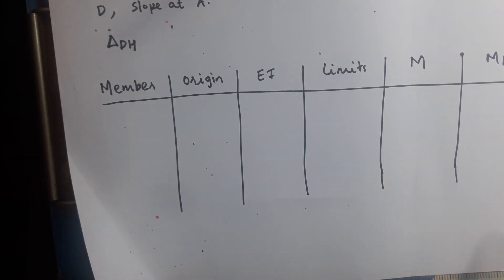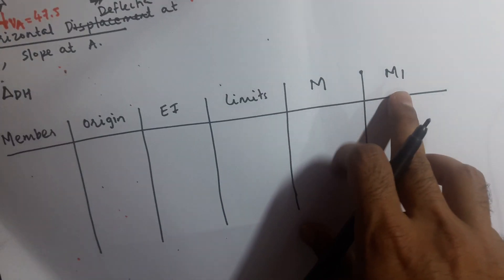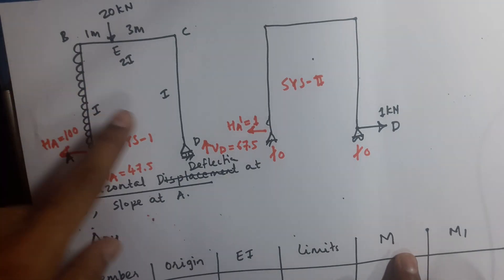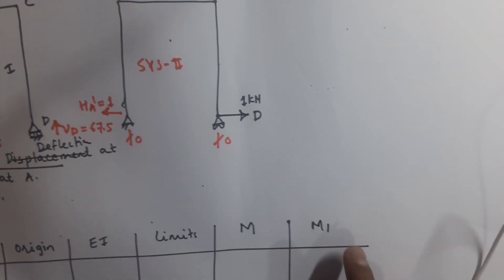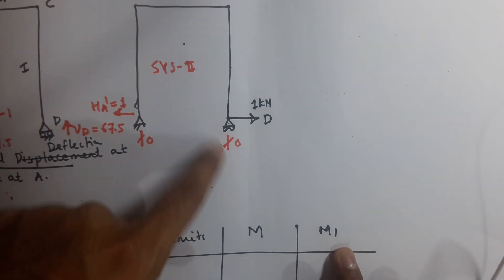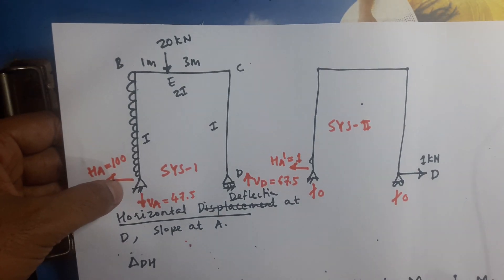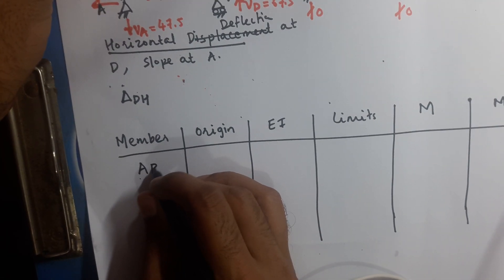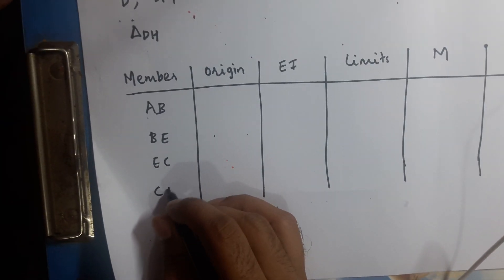We have a table with columns: member, origin, EI, limits, M (moment in System 1 due to real loading), and m1 (moment in System 2 due to unit load). The members are AB, BE, EC, and CD — whenever you have a point load you take that as a separate member.